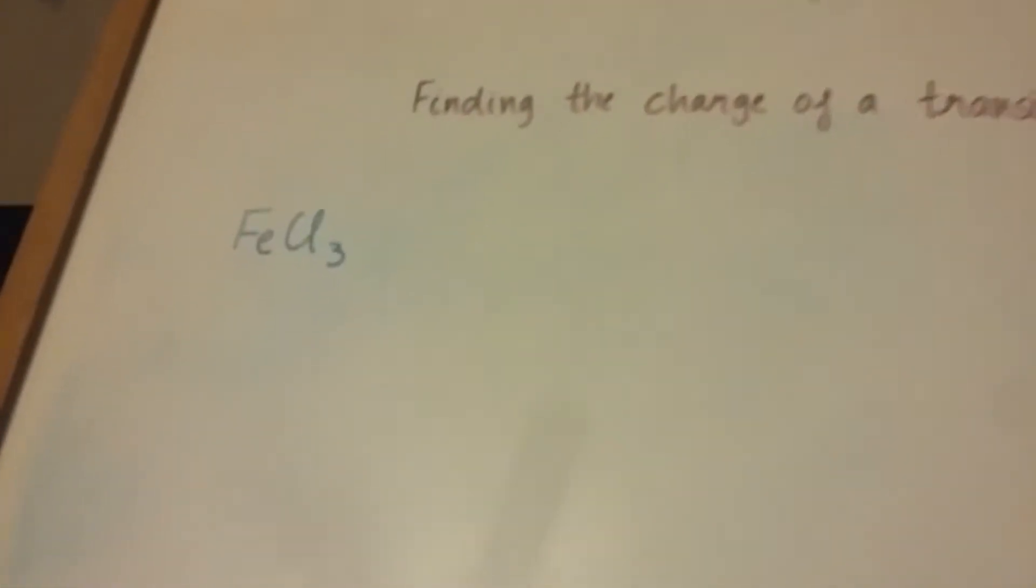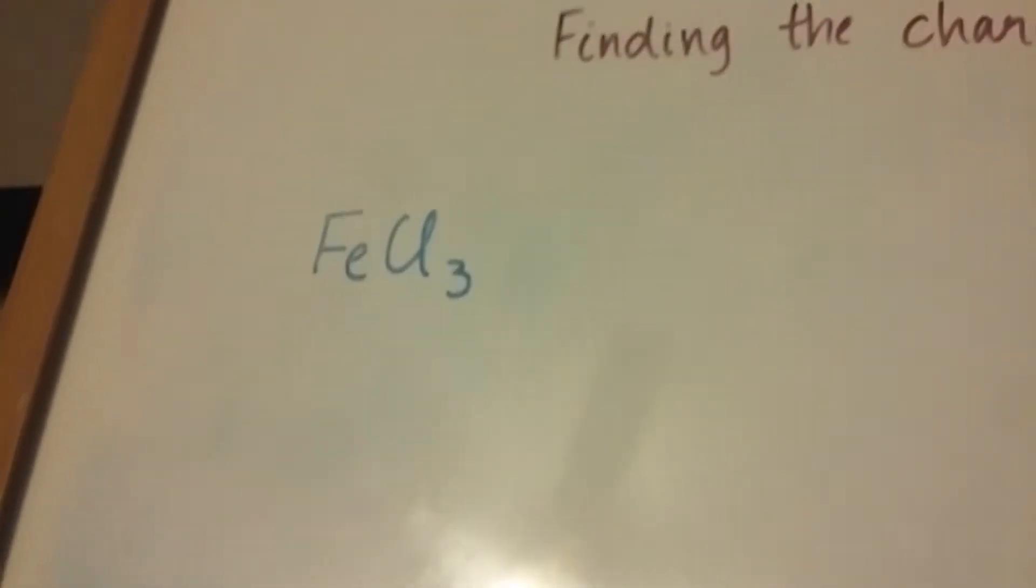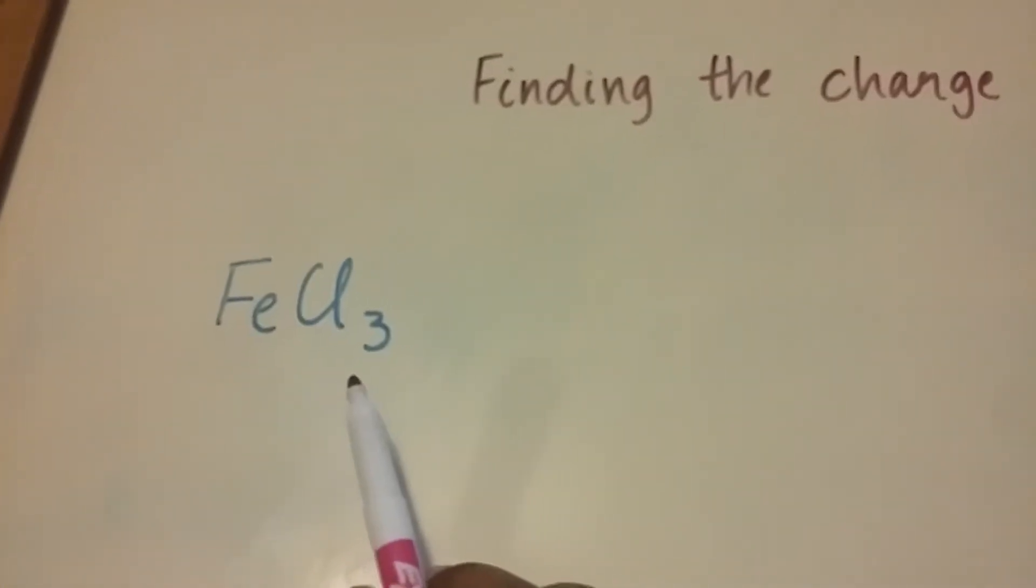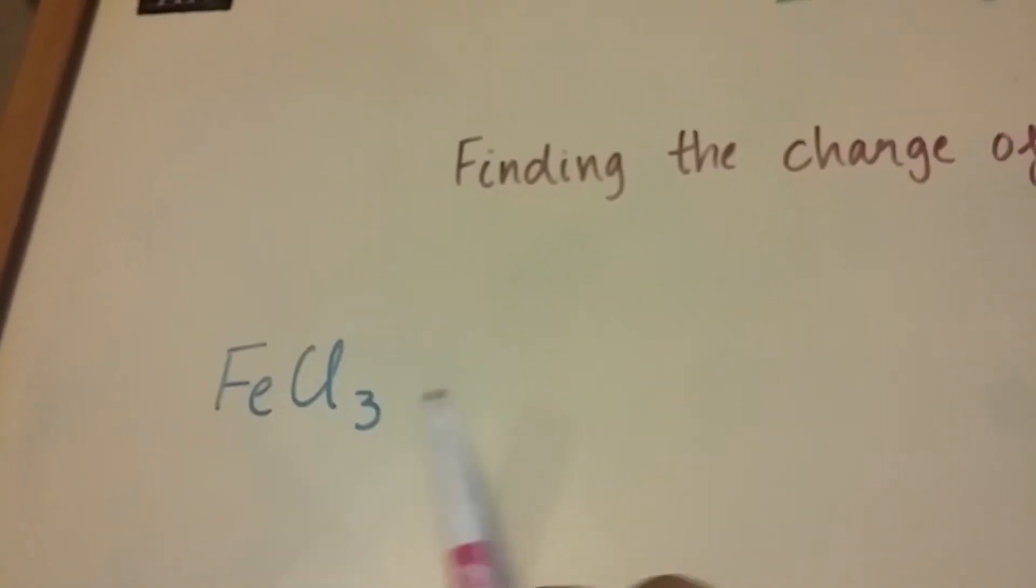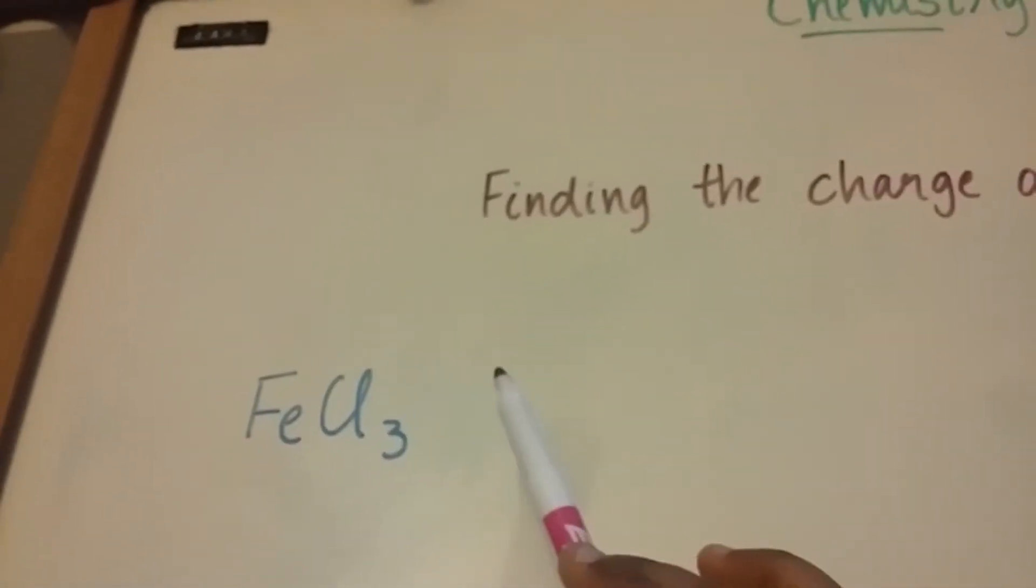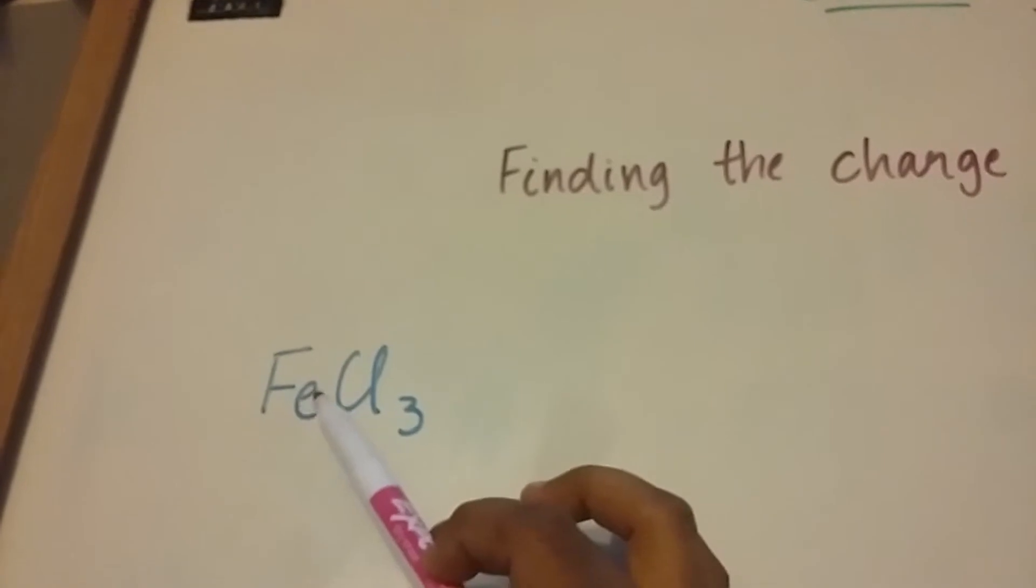So I'll show you this with a couple of examples. The first one is this compound which has iron and chloride in it. So if you're trying to name this, it would be iron something chloride, where that something refers to the charge of the iron.